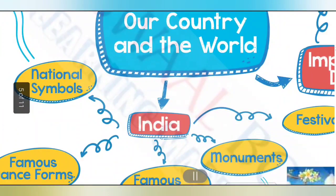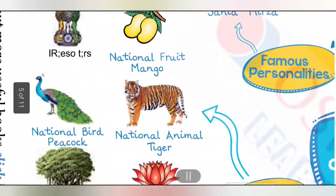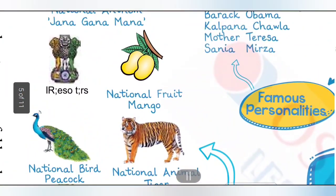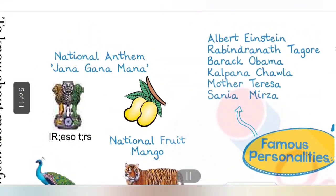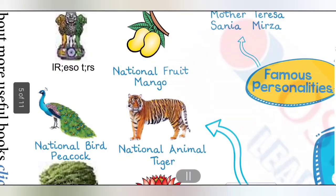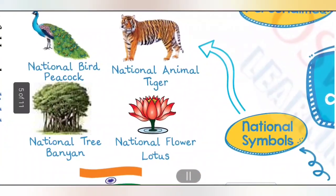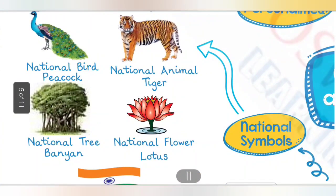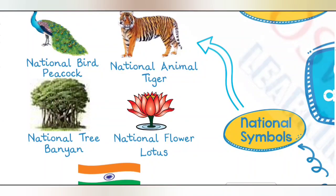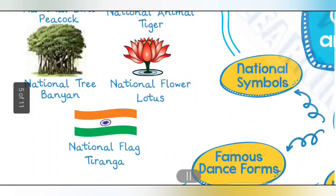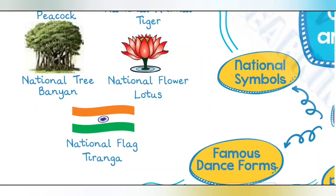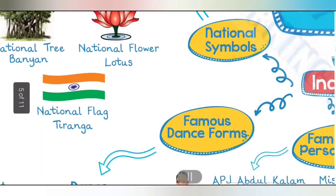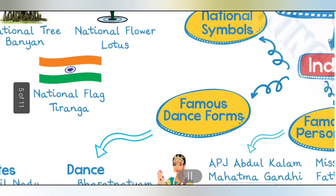India is our country. Our national symbols are: National Fruit - Mango, National Anthem - Jana Gana Mana, National Bird - Peacock, National Animal - Tiger, National Tree - Banyan, National Flower - Lotus, National Flag - Tiranga.